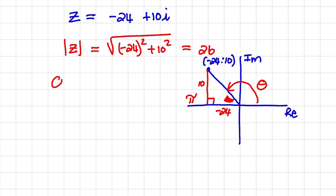So the argument would be pi minus that reference angle, which is the arctan of 10 over 24. Remember, we use the absolute values when we find this reference angle. That simplifies to 2.747.